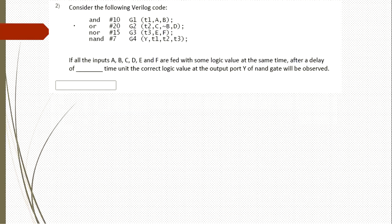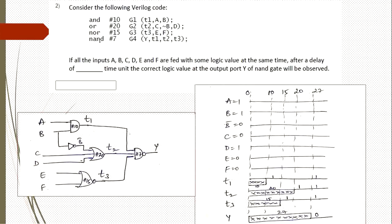The next question: consider the following Verilog code. They have used primitives — AND gate, OR gate, NOR gate, NAND gate — with specified gate delays. T1, T2, T3 are the outputs of AND, OR, and NOR gates, connected as inputs to the NAND gate. The question asks: if all inputs A, B, C, D, E, F are fed simultaneously, after how many time units will the correct logic value appear at output Y?